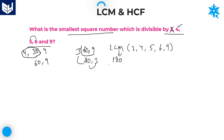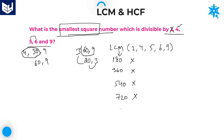The LCM of all the given numbers is 180. The question asks for the smallest square number exactly divisible by all these numbers, so we check multiples of 180. 180 is not a perfect square. 360 is not a perfect square. 540 is not a perfect square. 720 is not a perfect square. The fifth multiple, 900, is a perfect square. So 900 is the smallest square exactly divisible by all the given numbers. Therefore, 900 is the answer.